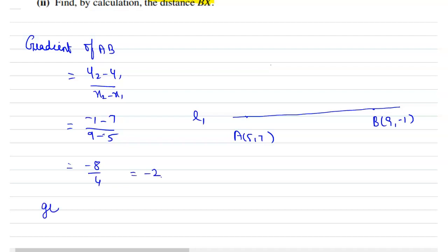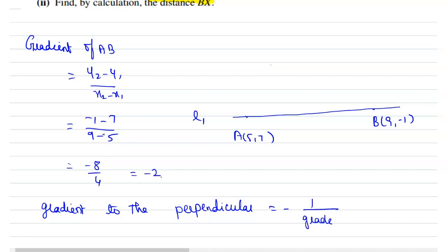That gives us −8 divided by 4, which is −2. Now from this, we have to find the gradient of the perpendicular. The gradient of the perpendicular is equal to the negative reciprocal of the gradient of AB, which is equal to −(−1/2), which equals 1/2.